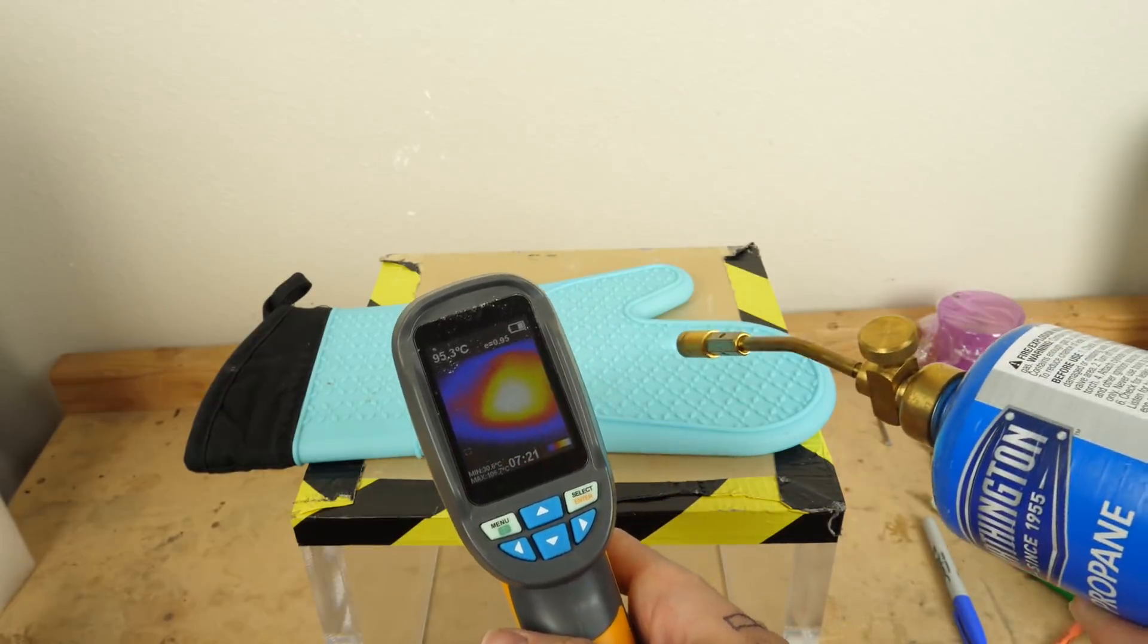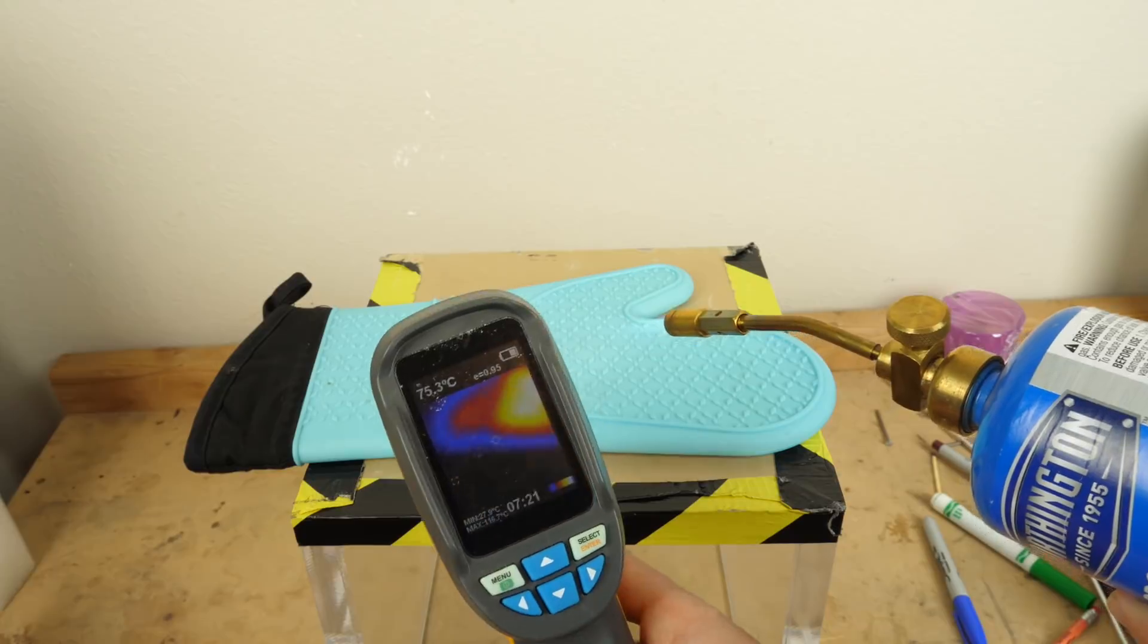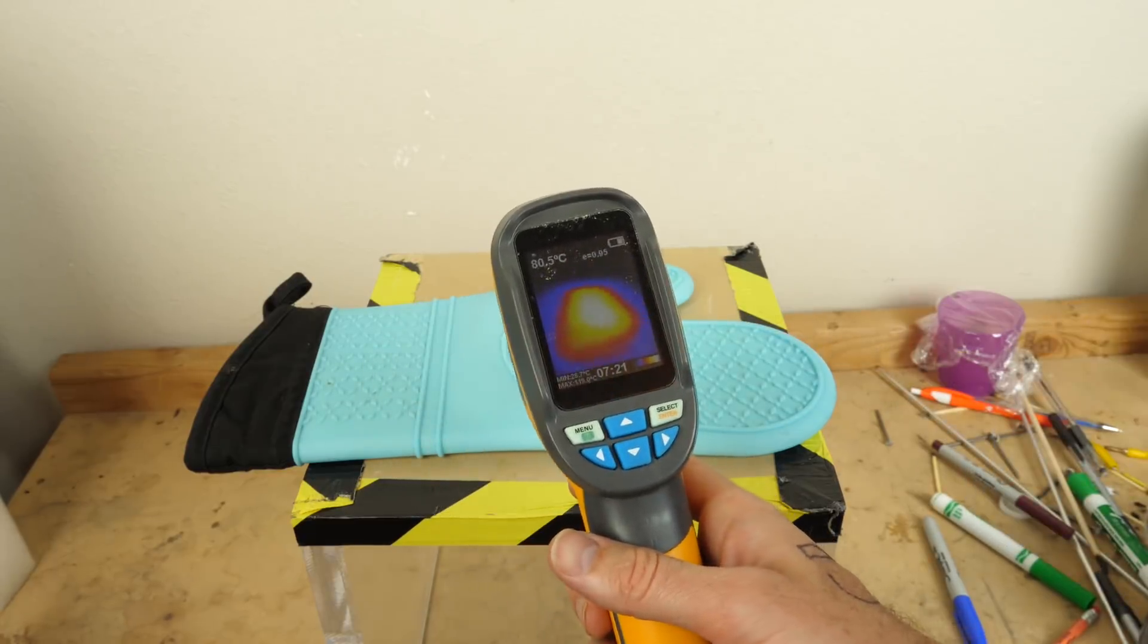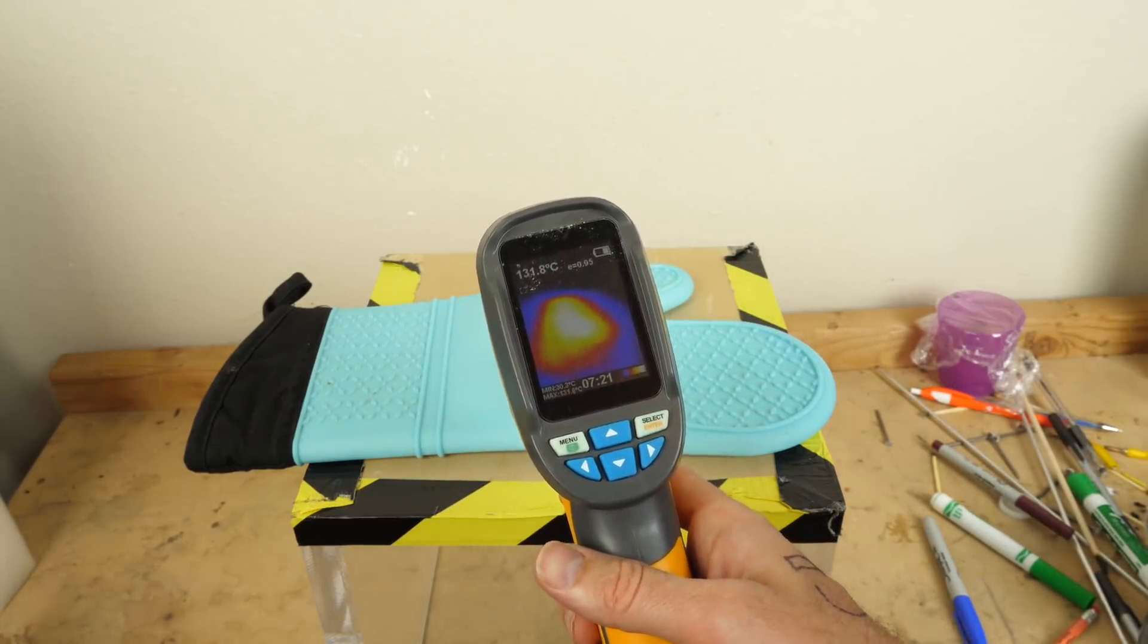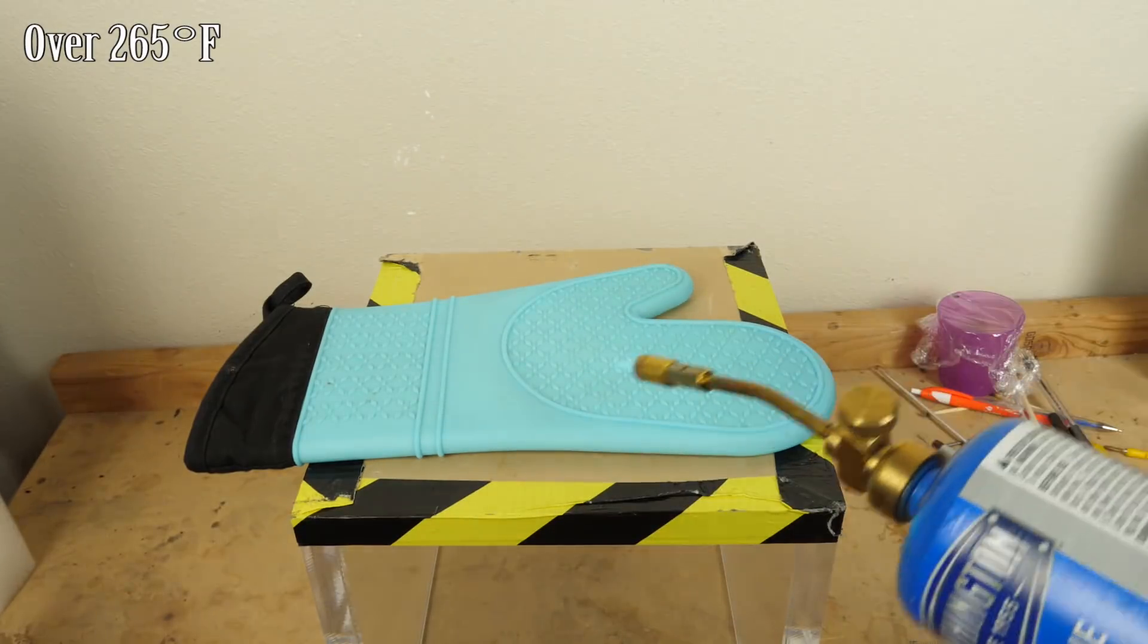silicone has a very low heat conductivity. So it doesn't conduct heat very well. So watch as I heat it with a blow torch here to over 130 degrees Celsius.